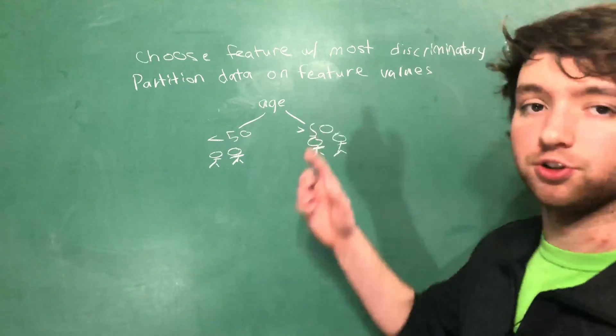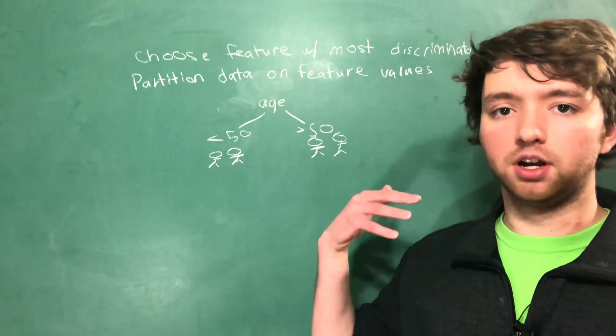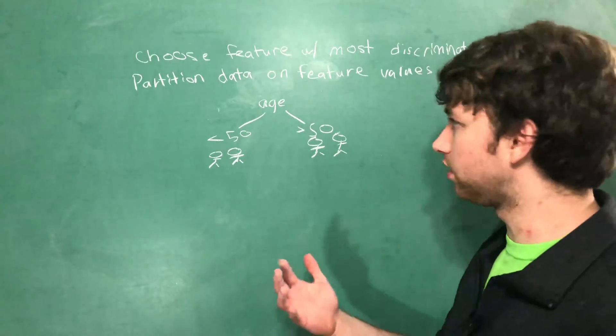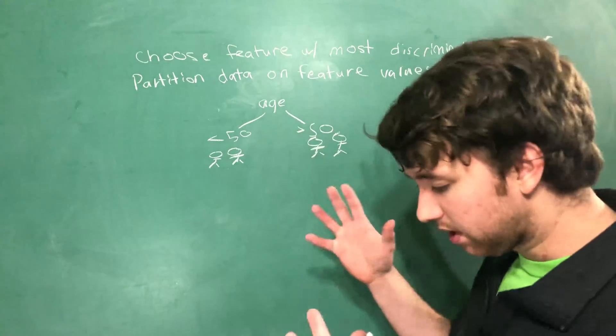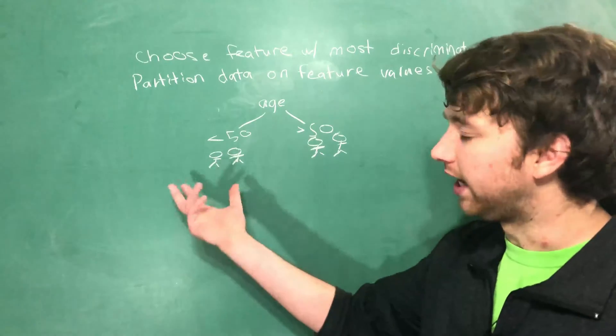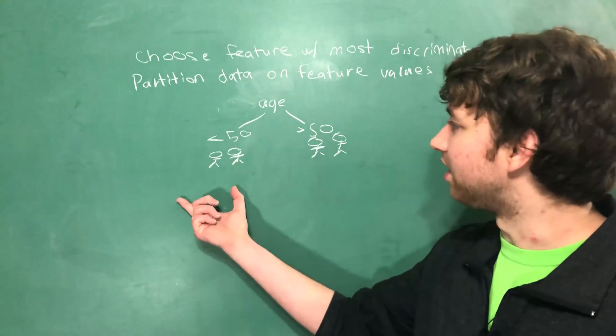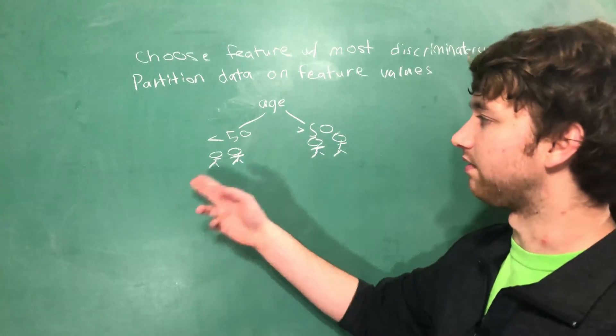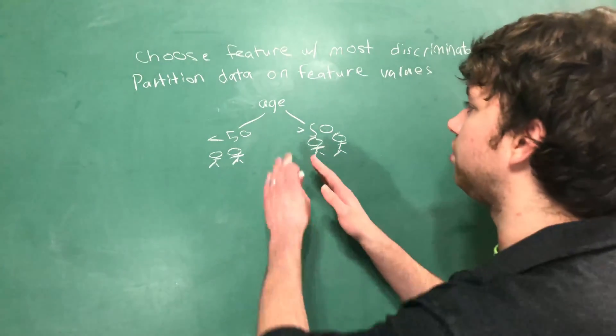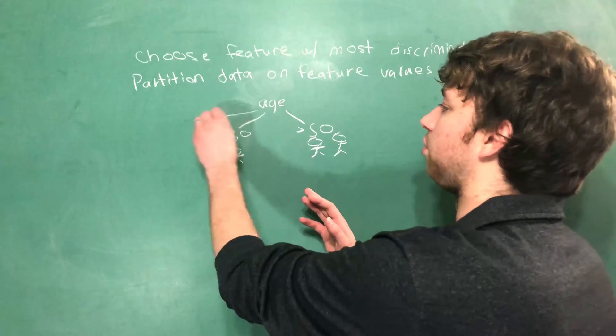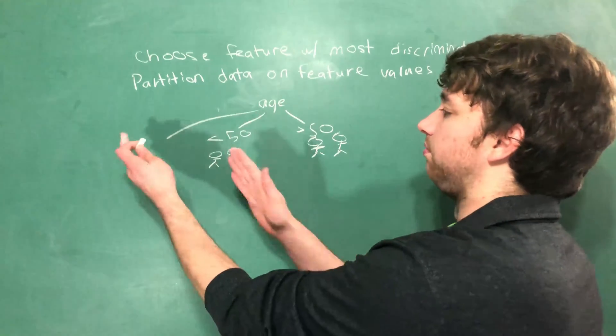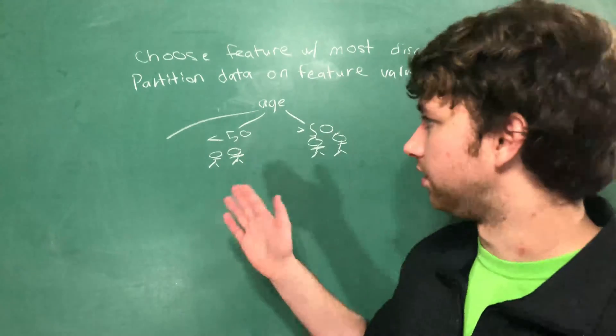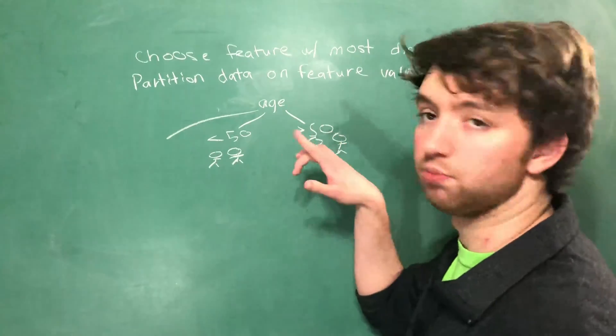The next thing is it's going to remove this descriptive feature from the descriptive feature list. So we have a list of all the descriptive features that we can choose from. We want to get rid of age. And that's because we don't want to split on age again, because we've already done that. If you did want to split on age again, such as less than 25 and greater than 25, well, you could just do it once and have multiple branches, 0 through 25, 26 through 50, 51 through however you want to split it. It doesn't just have to be two partitions.